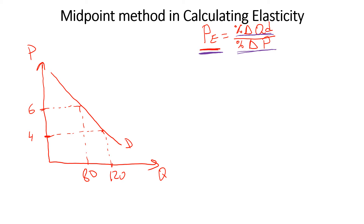Let's start with the percentage change in price. In order to find the percentage change in price, first what we need to do is find the midpoint for our price. To find a midpoint for our price, we need to find what is the midpoint between 4 and 6.